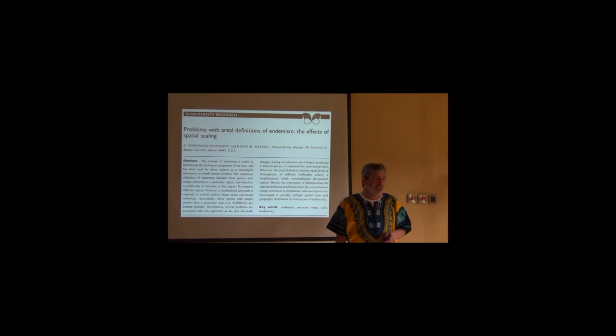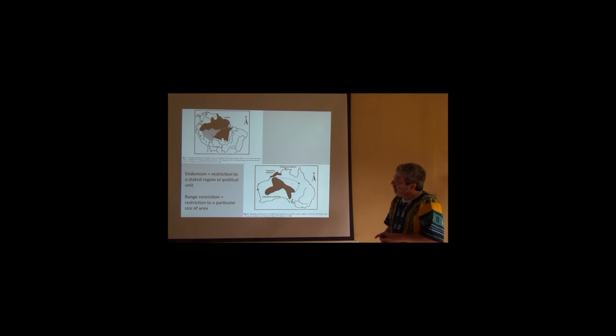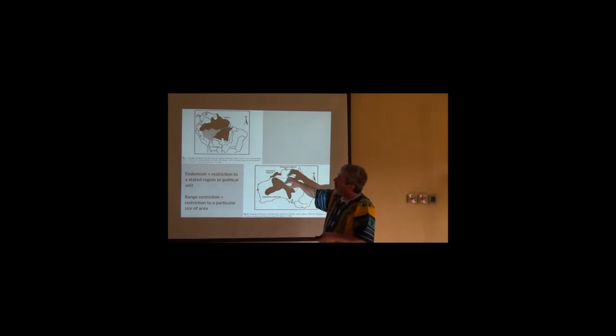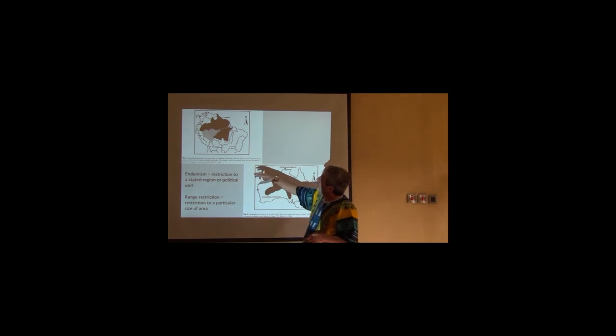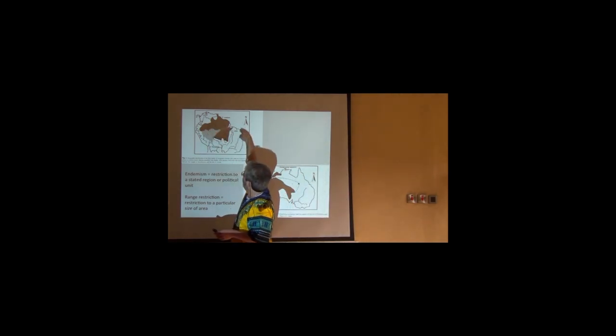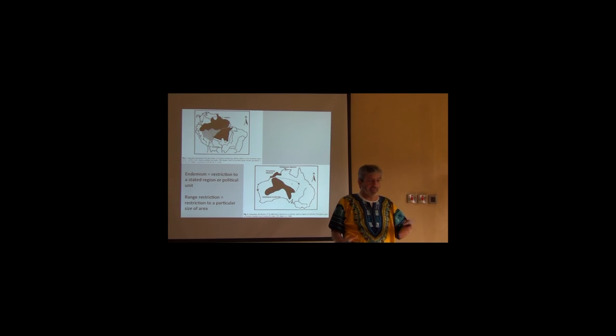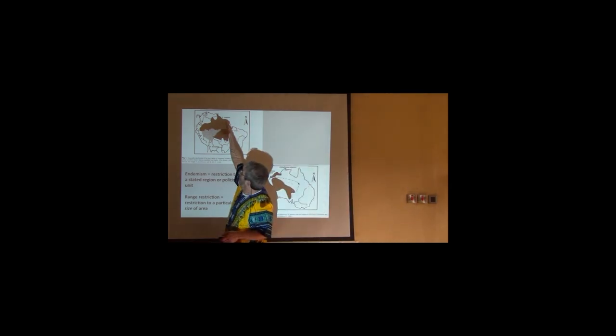So years and years ago, one of my students and I wrote this paper about the endemic bird areas. And it was simply a commentary that we're using one term to refer to two very different concepts. And so we gave this set of maps. And essentially, in each map, we put two taxa. So for example, this is Psophia crepitans, the Psophia trumpeters. They look like a small chicken, usually mostly black. And they're across the Amazon basin. But they're very much structured, species by species, by river boundaries.